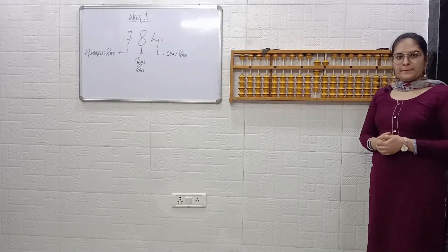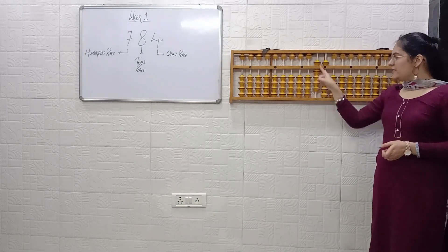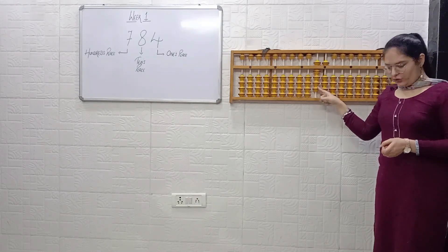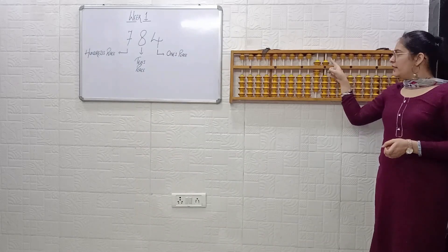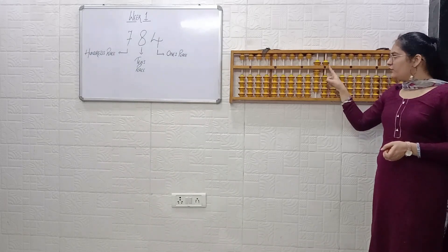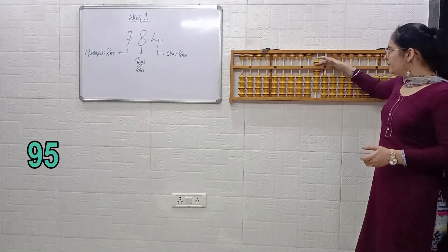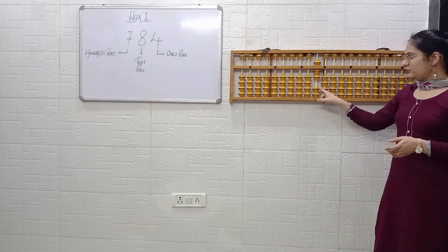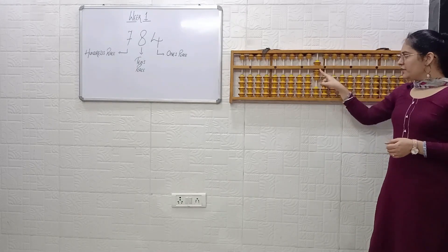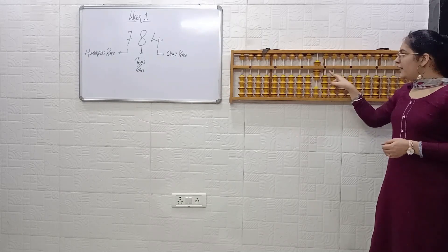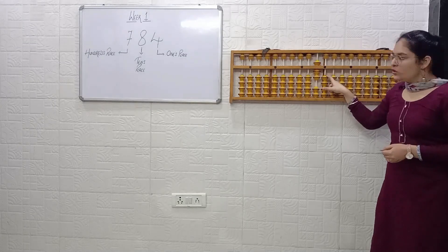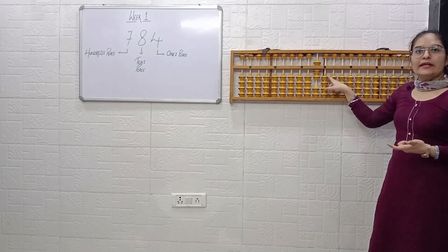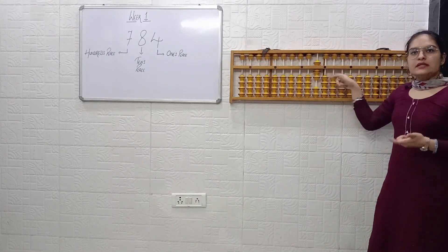Tell me the next answer quickly. Tens place: 5, 6, 7, 8, 9 — keep that 9 in your mind. Ones place: it's 5. So the answer is 9, 5 — that is 95. Next: tens place is 5, 6, 7 — that is 7. Ones place: it's 0. So the answer is 7, 0 — that is 70. It is not just 7; we have 0 at the ones place.